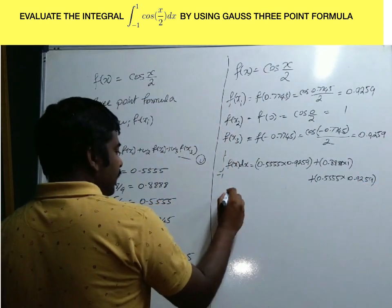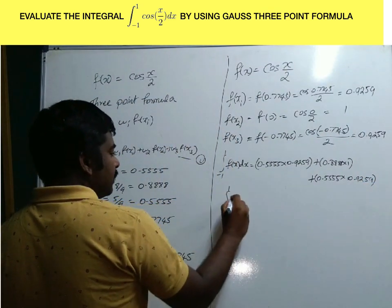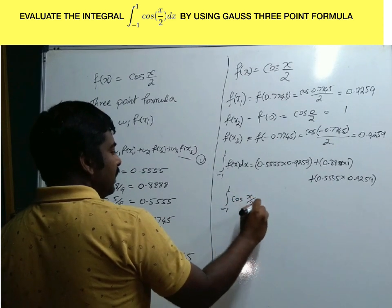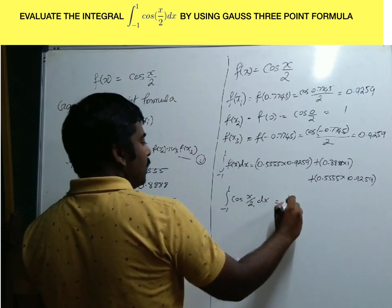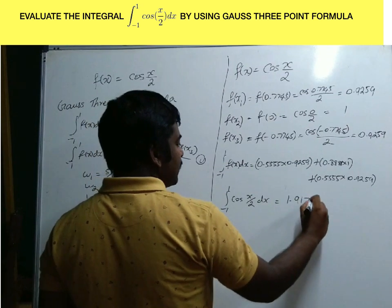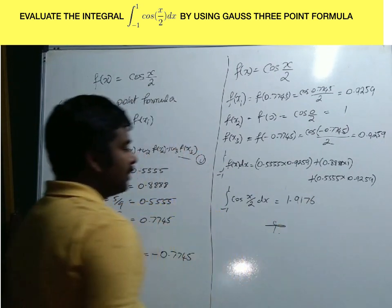Finally, you will get the integral of cos(x/2) dx equals 1.91776. This is the final result.